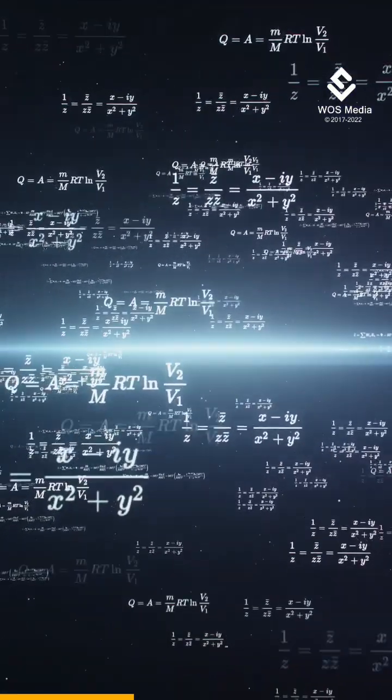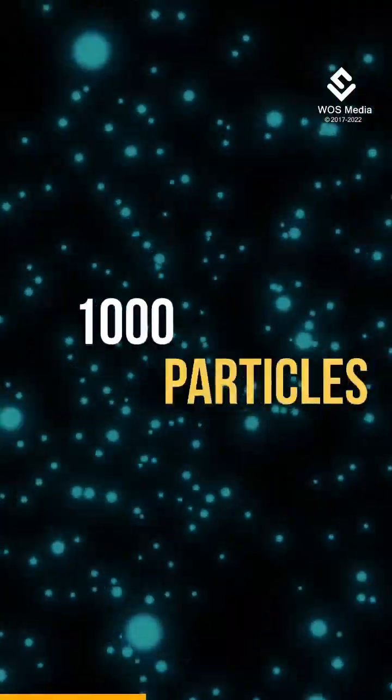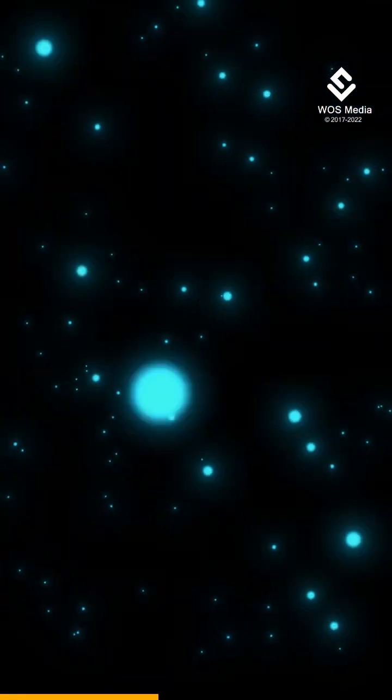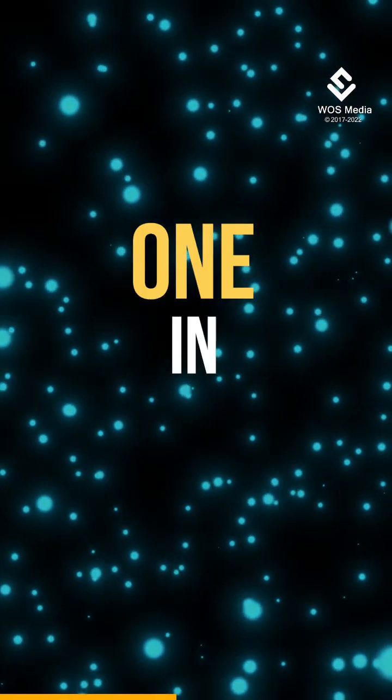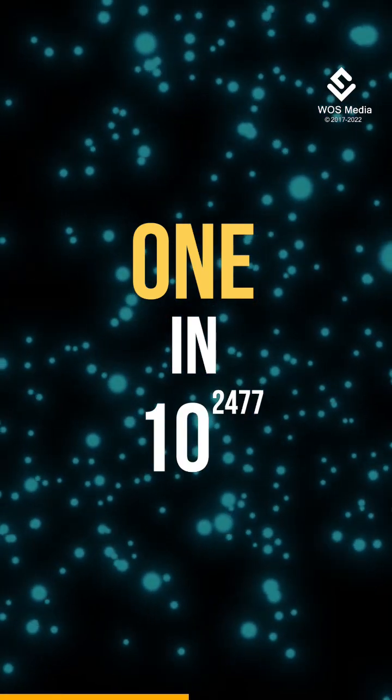When you do the maths, it quickly becomes unlikely. For just 1000 particles to interact in exactly the same way twice, the chance would be 1 in 10 to the power 2477.